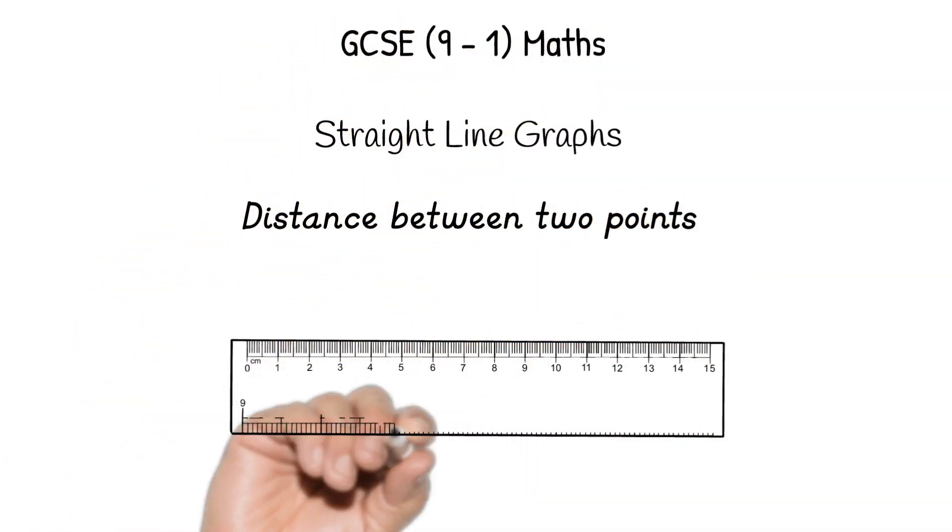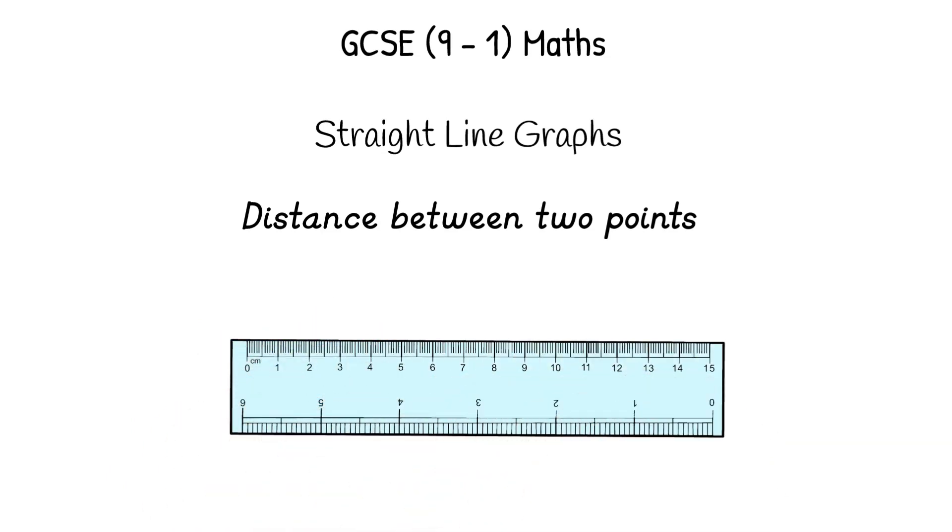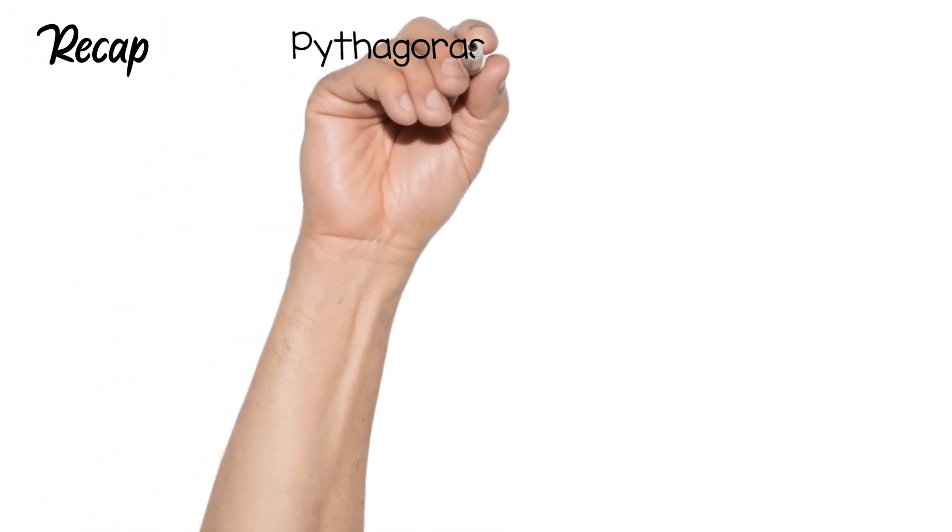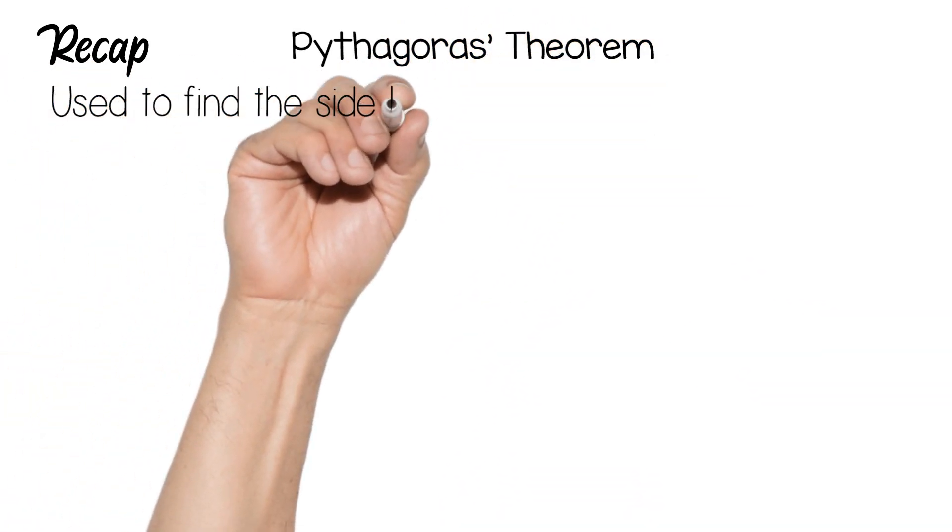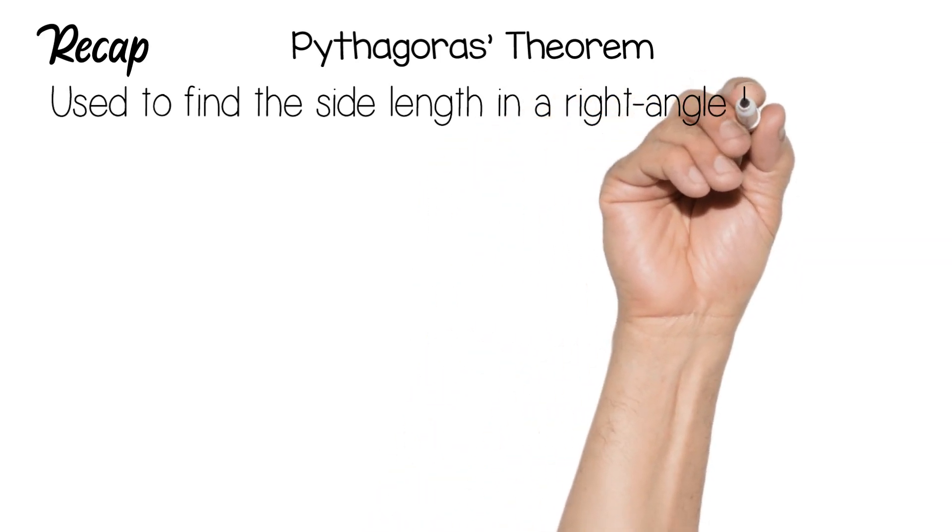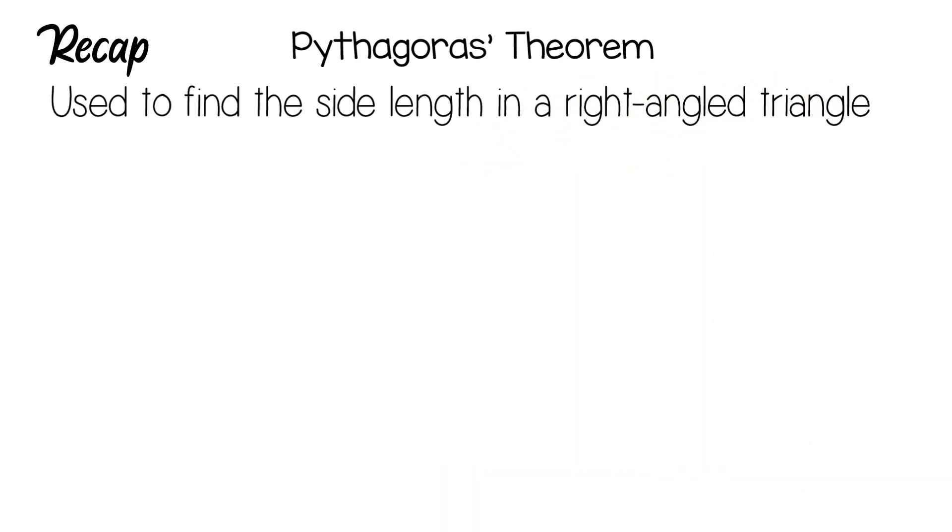In this video we are looking at finding the distance between two points on a graph. So just to recap, you do need to be able to work through the Pythagoras theorem. You basically use this theorem to find any side length in a right-angled triangle.